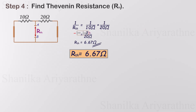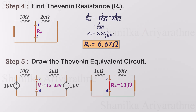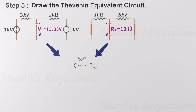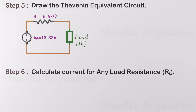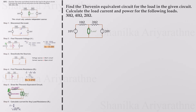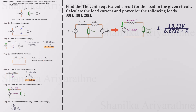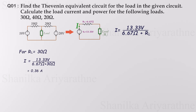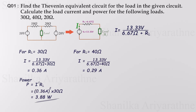Now that we've found the Thevenin voltage and Thevenin resistance, let's draw the Thevenin equivalent circuit. To finalize the process, let's calculate the current for a load with resistance R using the simplified Thevenin equivalent circuit and Ohm's law. Let's calculate the power for each load. For a 30 ohm load, the load current is 0.36 amps and the load power is 3.88 watts. For a 40 ohm load, the load current is 0.29 amps.